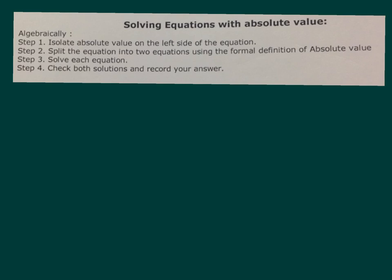The reason I went through that with the pictures is so you can see why we do what we do when we solve equations. Step one: isolate the absolute value on the left side of the equation — get it all by itself before doing anything else. Step two: split the equation into two equations using the formal definition — one for the positive version and one for the negative version. Step three: solve each equation. Step four: check our solutions, because sometimes we get extraneous results.